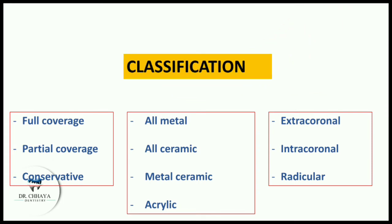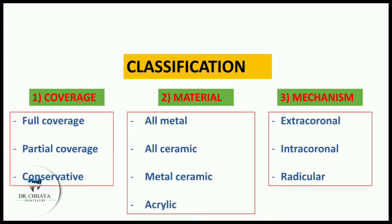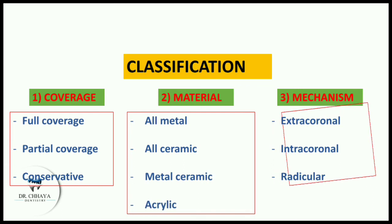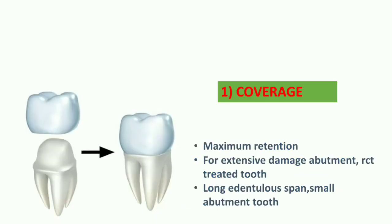Retainers are classified on the basis of: coverage, material, and mechanism. According to coverage, we have full coverage retainer, partial coverage retainer, and conservative retainers. According to material, we have all-metal, all-ceramic, metal-ceramic, and acrylic. According to mechanism, we have extracoronal retainer, intracoronal retainer, and radicular retainers.